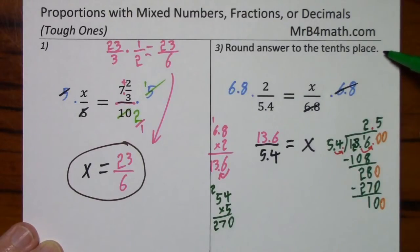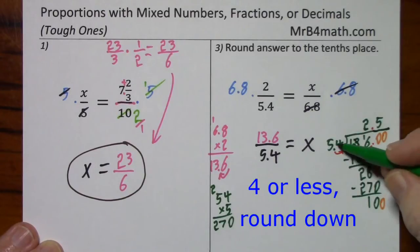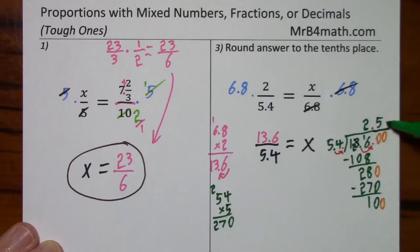Notice it says to round to the tenths place. I already have the tenths place. All I need is to know this next digit. And obviously 54 is only going to go in there one time. So I don't have to do any calculation. So rounding to the tenths place, we get 2 and 5 tenths.